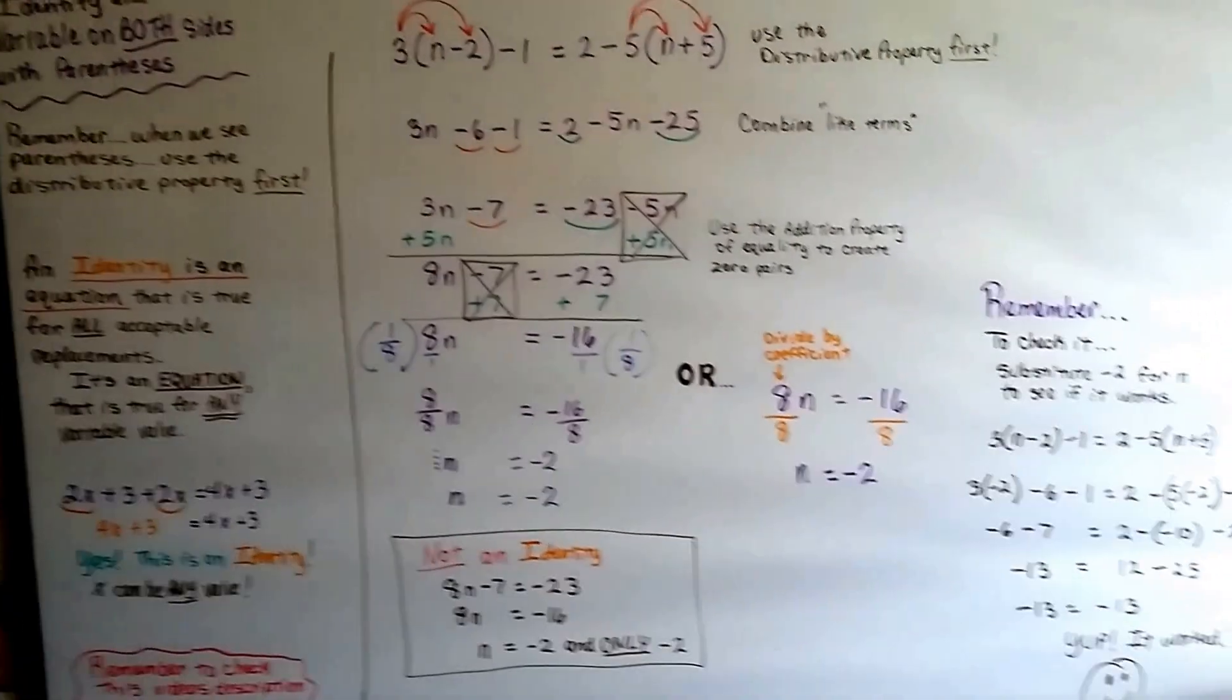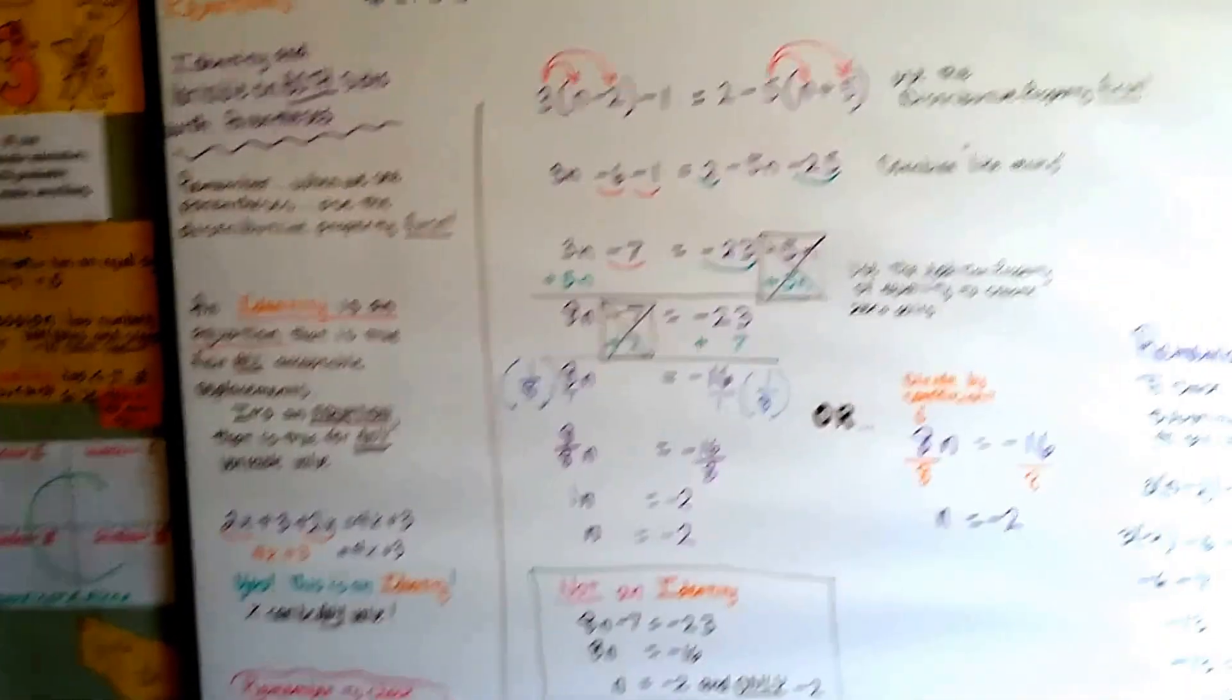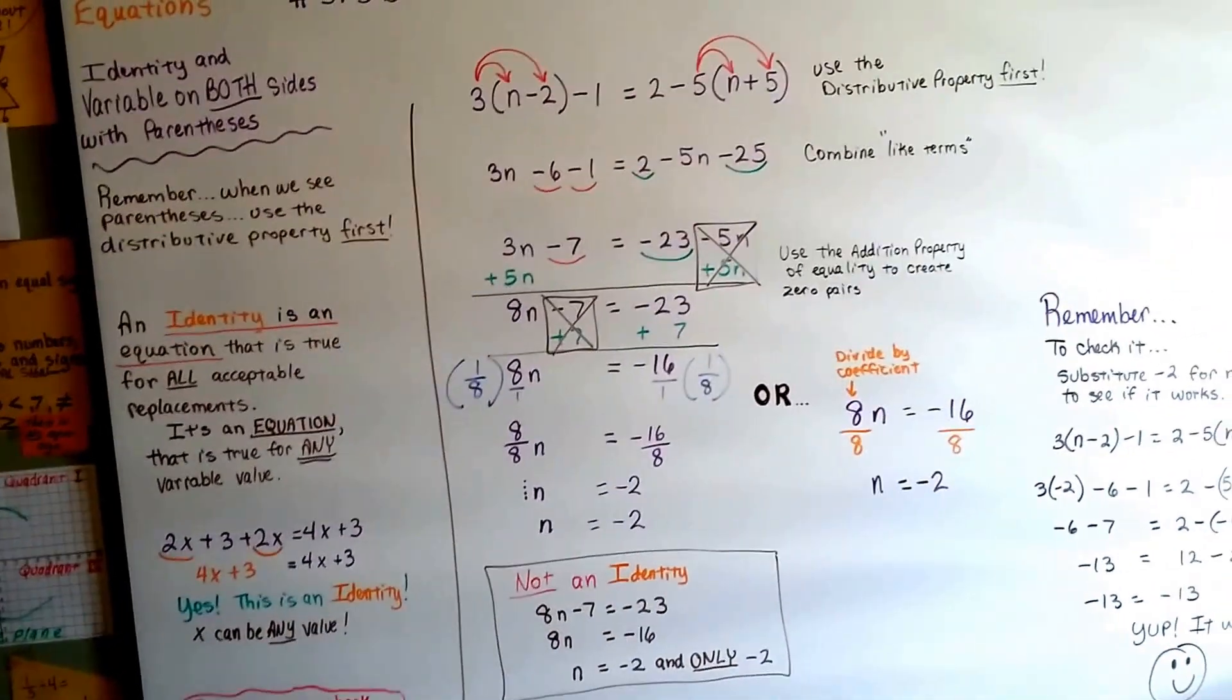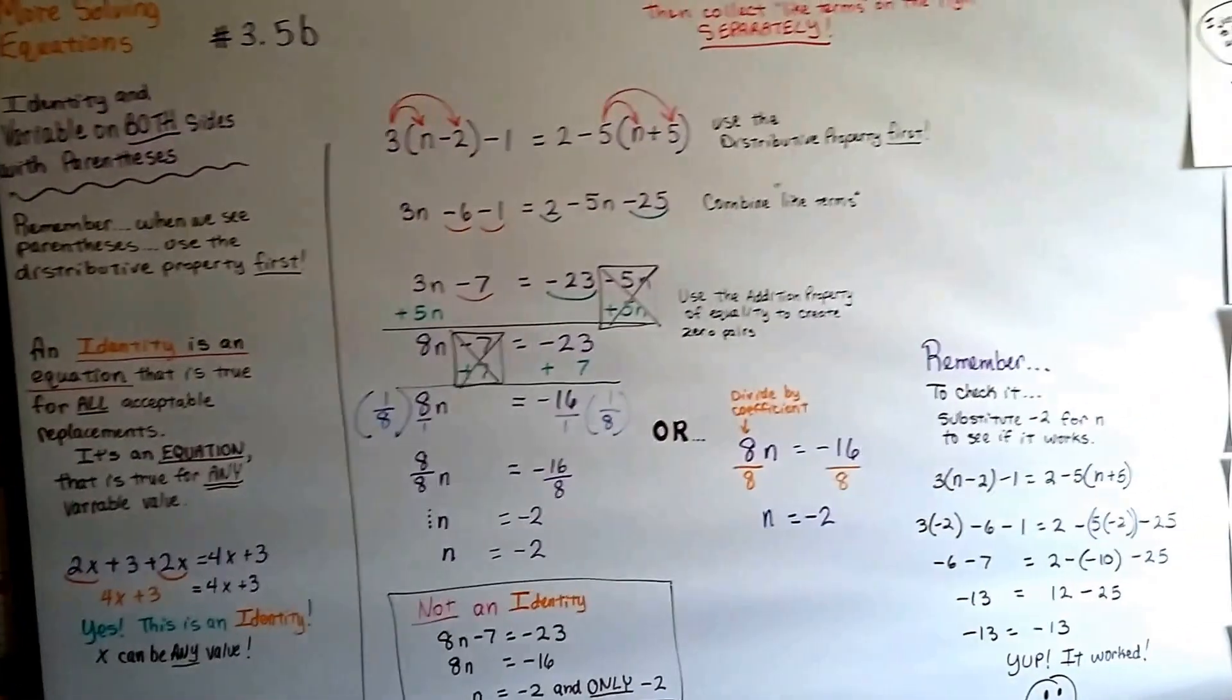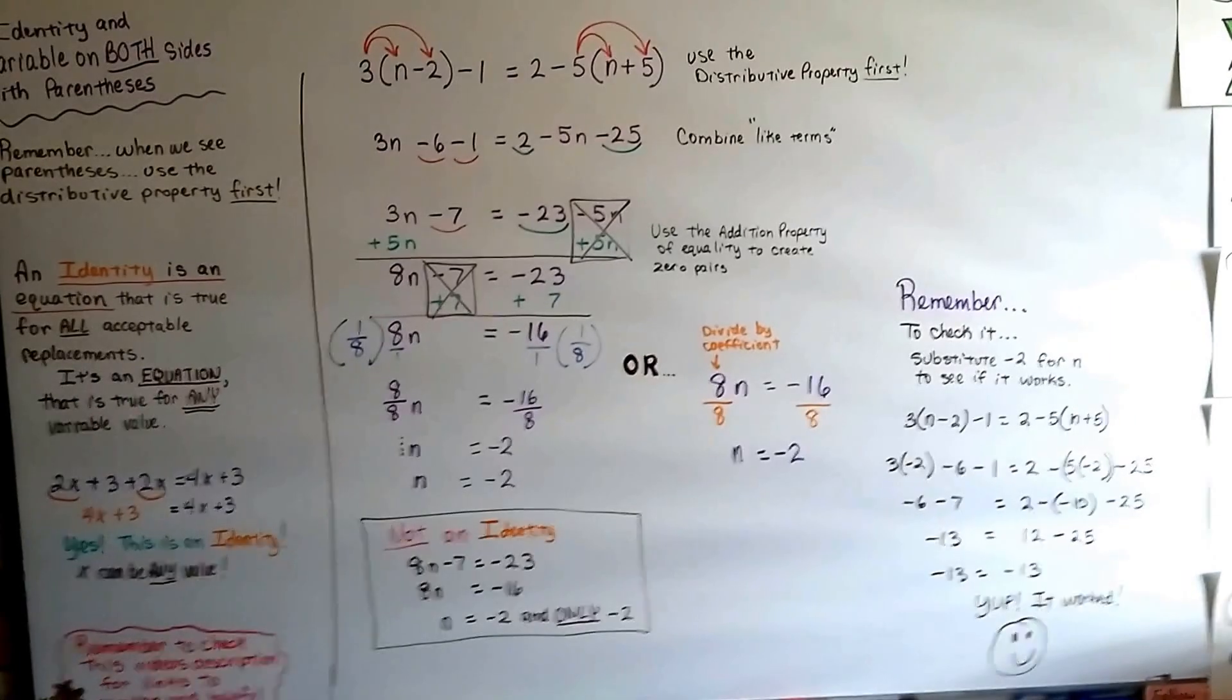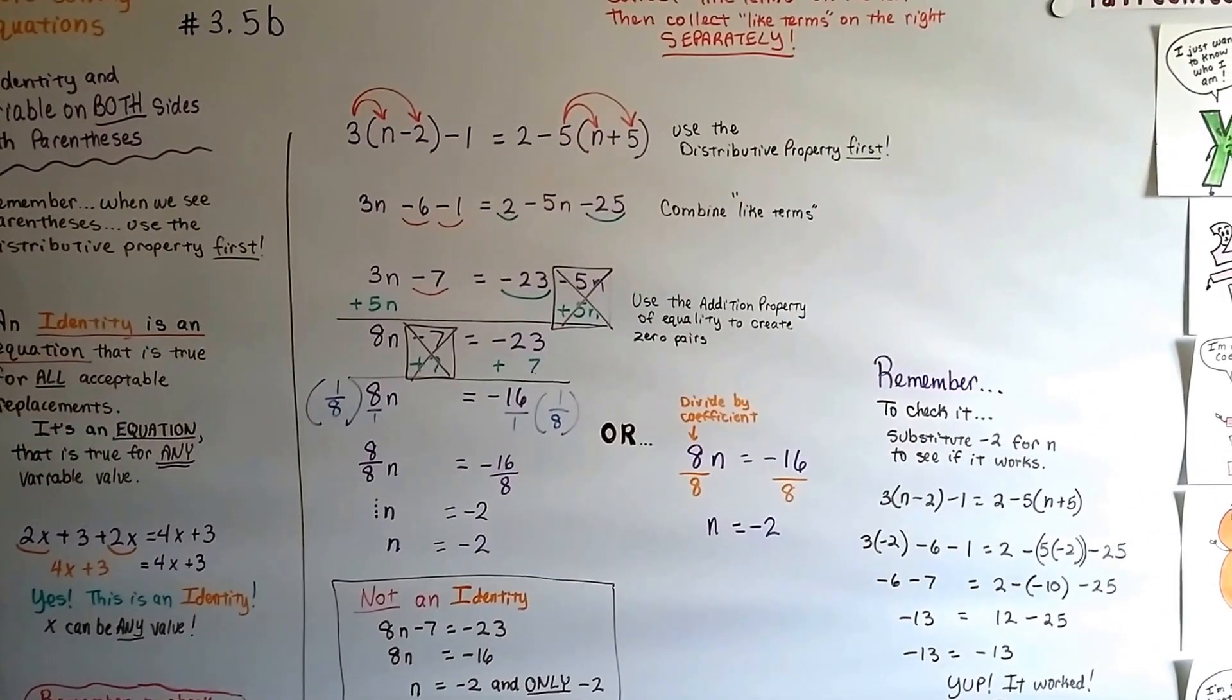All right, we're going to move on to the next unit to 3.6 and we're going to talk about clearing the equation of fractions and decimals and we can actually do it this way with these reciprocals. I'll see you there. That'll be 3.6a. Bye.